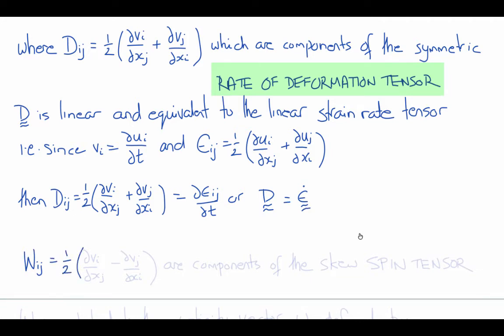The components of w are one-half del vi del xj minus del vj del xi, which is skew symmetric. And these are called the components of the spin tensor.